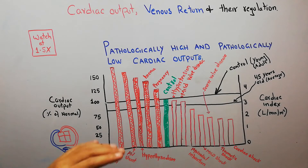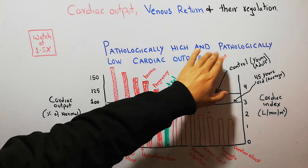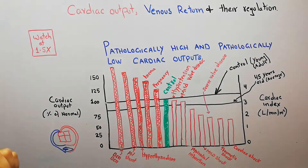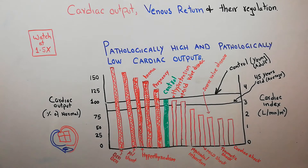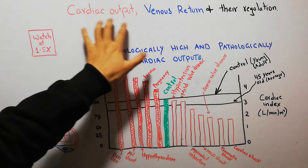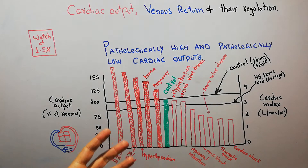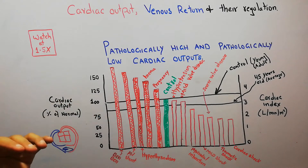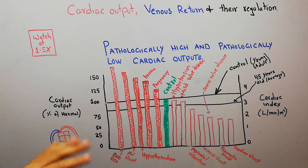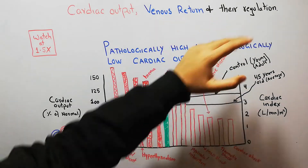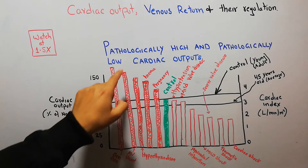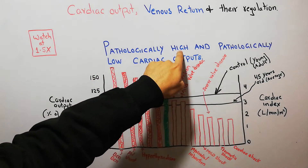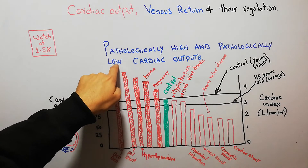Today in this lecture we are going to discuss the pathologically high and pathologically low cardiac output. We are discussing the chapter of cardiac output, venous return and their regulation, covering different conditions which lead to high and low cardiac output abnormalities. First we will discuss conditions causing pathologically high cardiac output, then conditions causing low cardiac output.